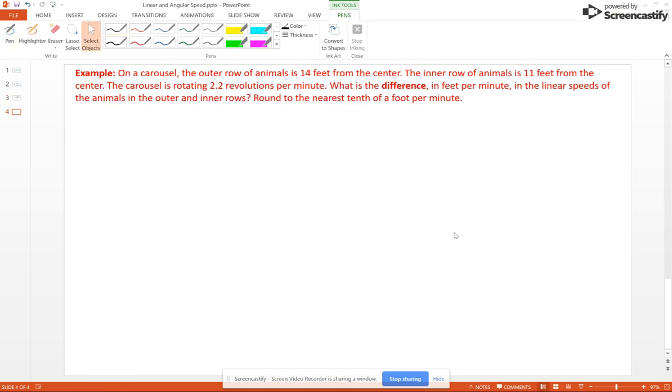Now last problem. Let's look at this. This one's a little bit more challenging, and this one really should have a diagram. So we have on a carousel, the outer row of animals is 14 feet from the center and the inner row of the animals is 11 feet from the center. So here is our carousel.